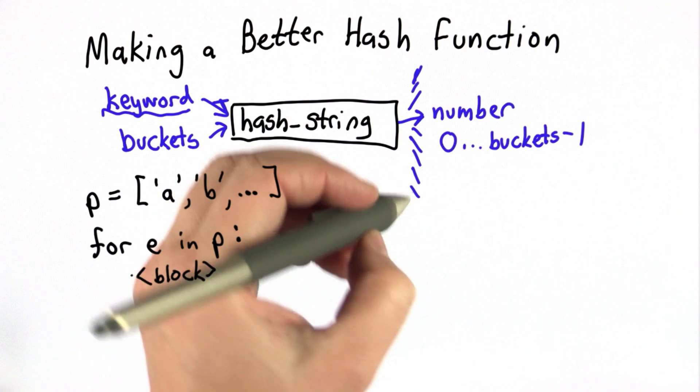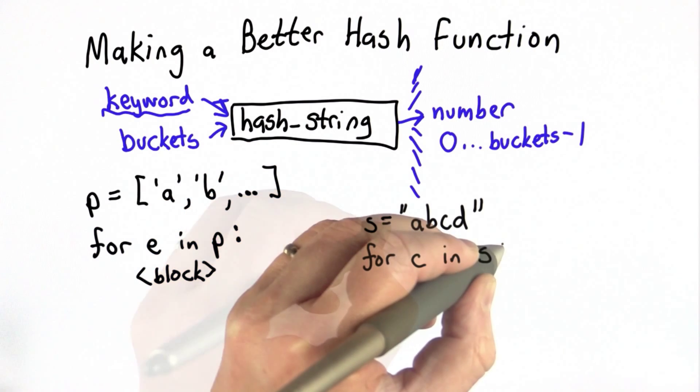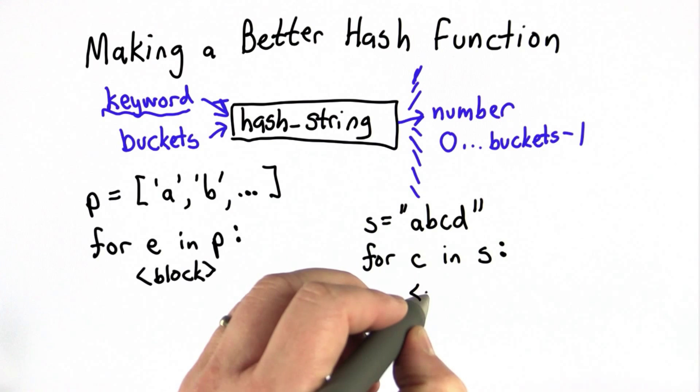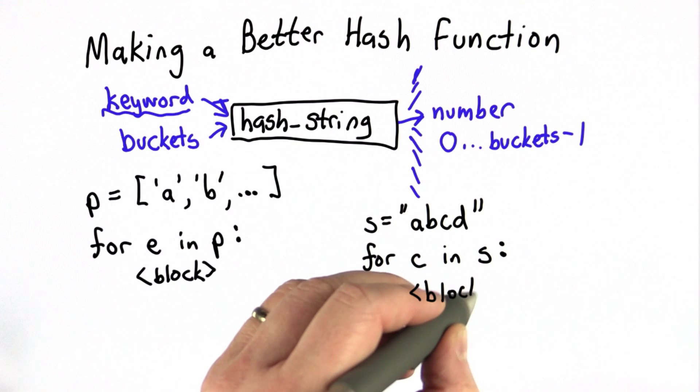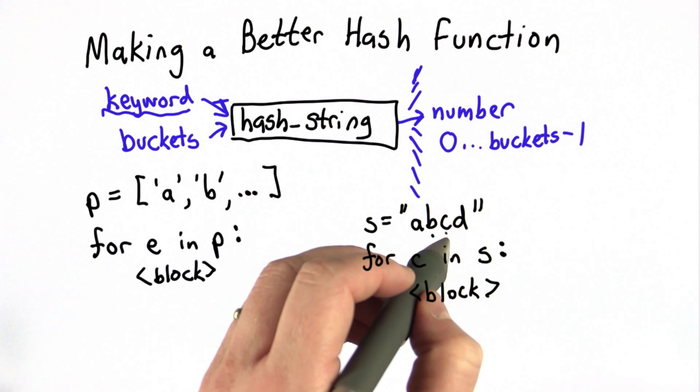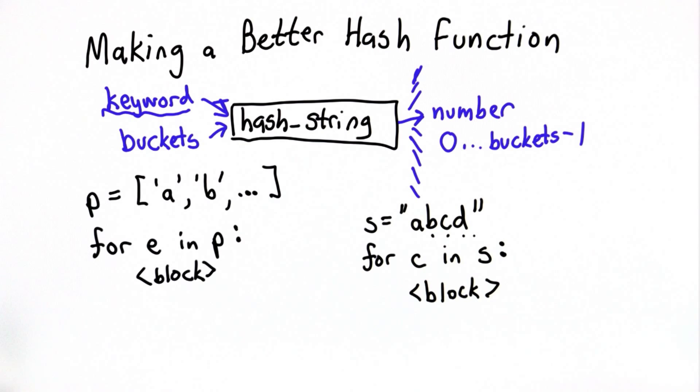We can do something similar with strings. If we have a string s, we can use the same construct to go through the characters in s. Each time we go through the loop, the value assigned to variable c will be a one letter string corresponding to each character in the string in order. So first it will have the value a, then the value b, then the value c, then the value d. This gives us a way to go through all the elements in the string.